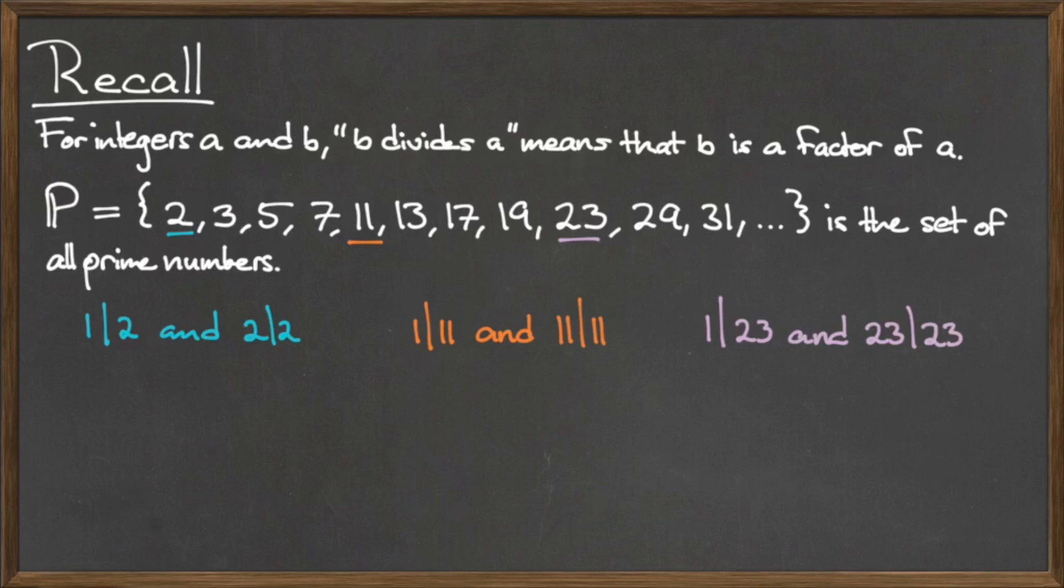Now, let's look at 11. Again, restricting ourselves to only positive divisors, the only two positive integers that divide 11 are 1 and 11 itself. So we write 1 divides 11 and 11 divides 11.